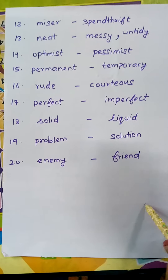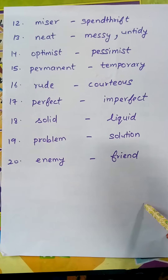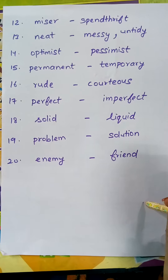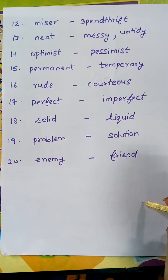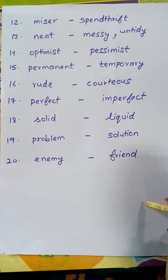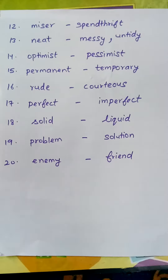So these are 20 antonyms. Write neatly in part B. Clear, children?